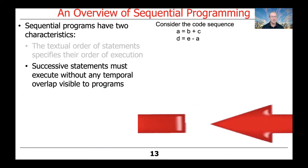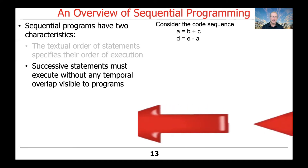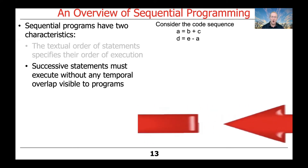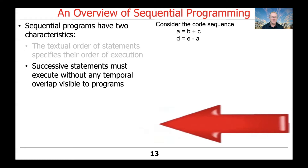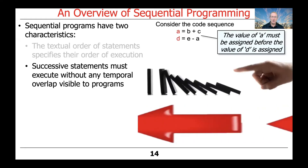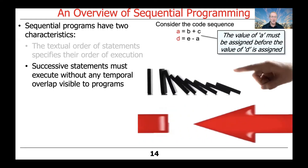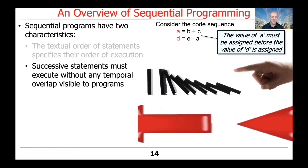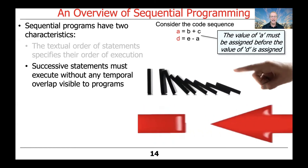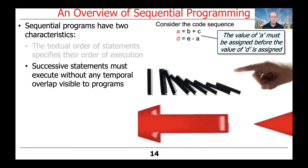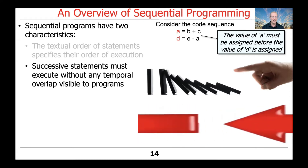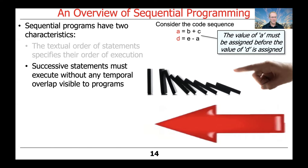The second characteristic of sequential programs is that successive statements must execute without any temporal overlap that's visible to programs or programmers. For example, consider this code sequence where we're assigning A the value of B plus C, and D the value of E minus A. Clearly, the value of A must be assigned before the value of D is assigned, otherwise we'll get very strange results.